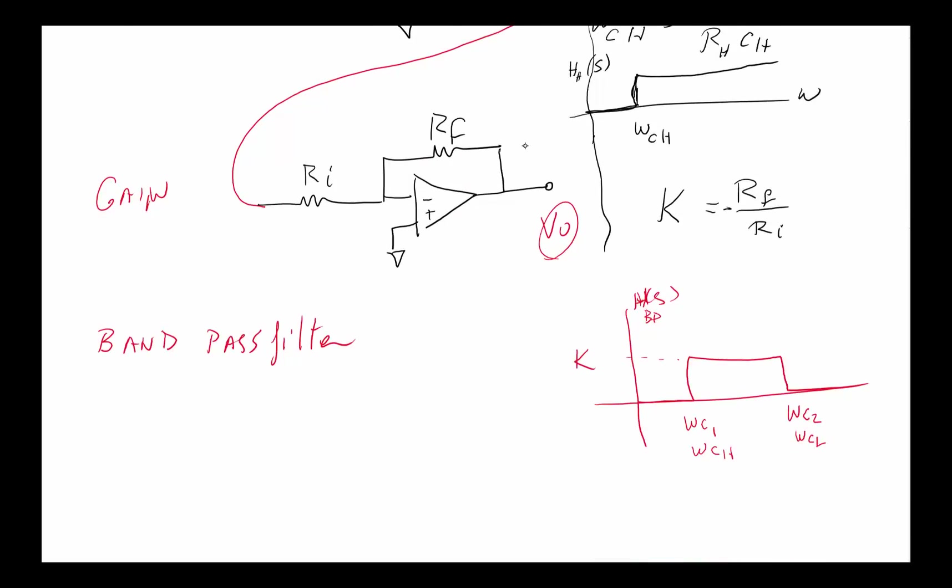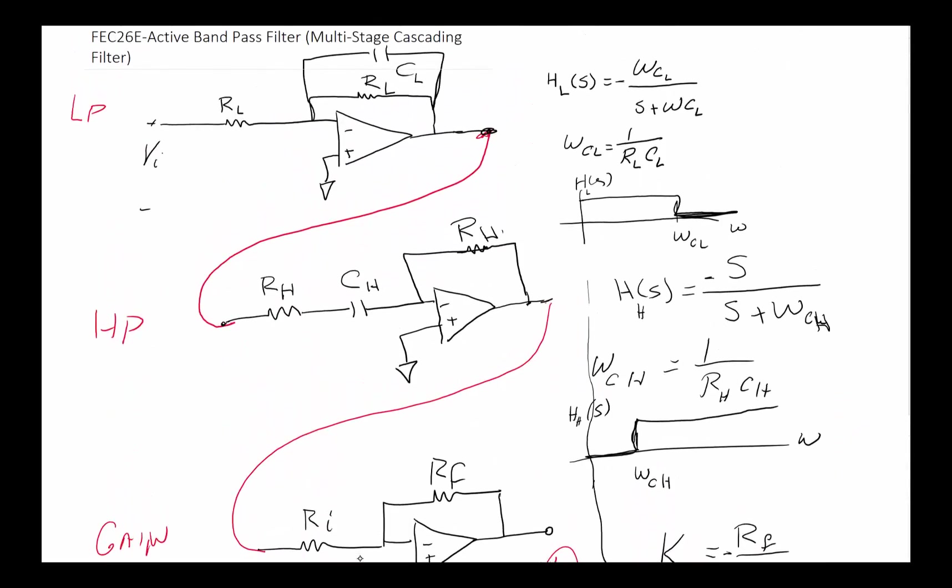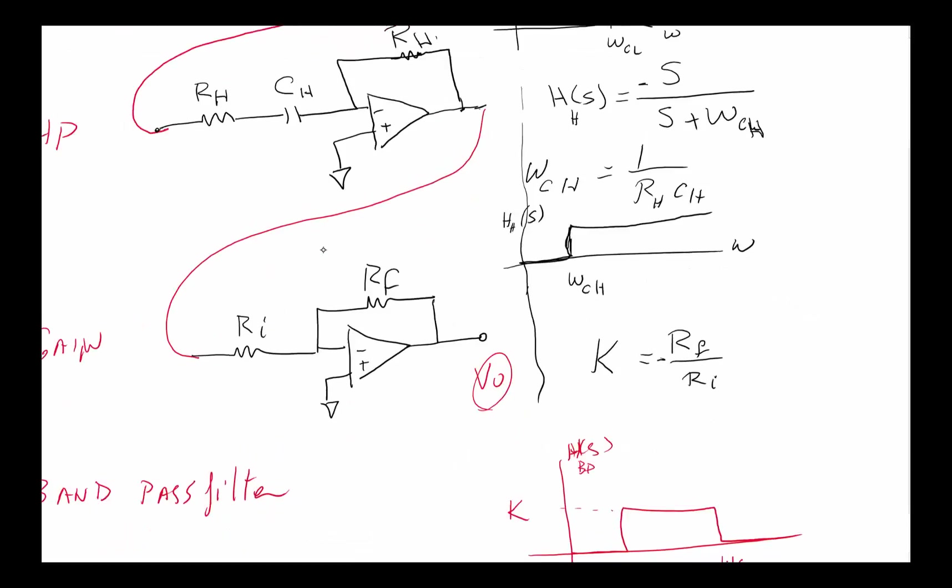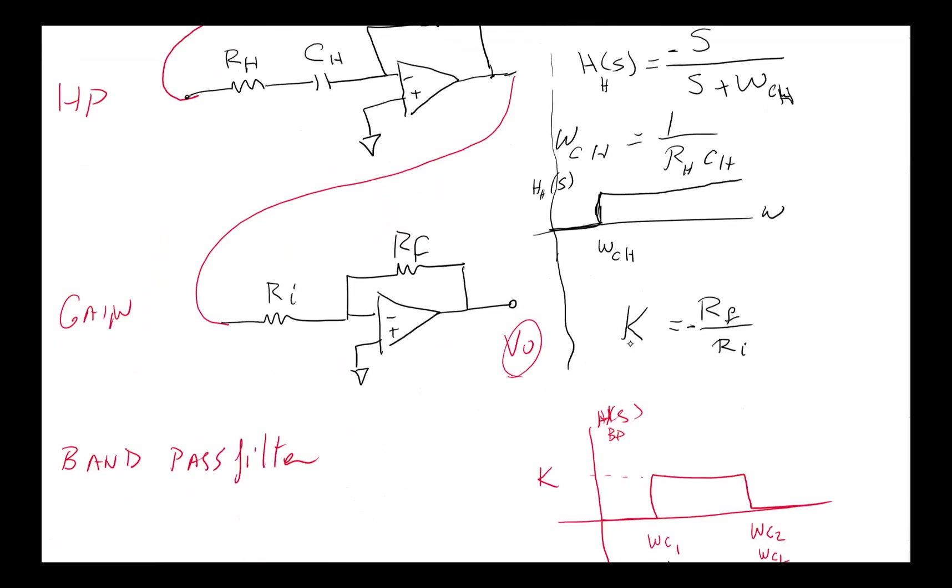We have a low pass filter connected to a high pass filter connected to a gain stage, and we get a bandpass filter. If you wanted to write it in the same way we've done before, we know that the total gain from the beginning to the end would be the multiplication of the low pass filter gain multiplied by the high pass gain multiplied by K, which is the amplifier stage.